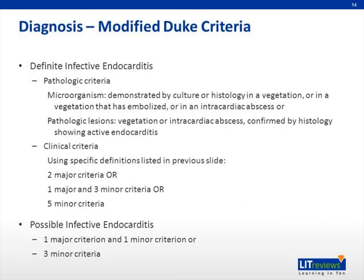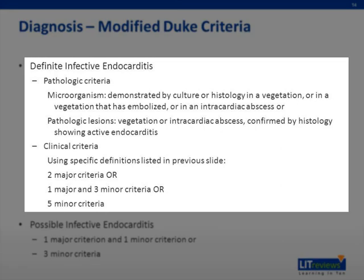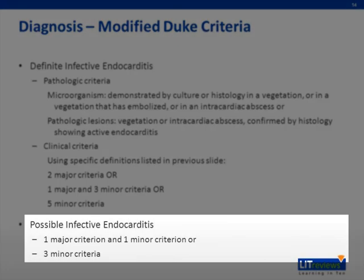Definite infective endocarditis can be defined by pathologic criteria — a microorganism demonstrated by culture or histology in a vegetation, in an embolized vegetation, or in an intracardiac abscess — or by pathologic lesions confirmed by histology showing active endocarditis. When histological diagnosis is not available, clinical criteria apply: definitive endocarditis requires two major criteria, or one major and three minor criteria, or five minor criteria. Possible infective endocarditis is defined by one major and one minor criteria, or three minor criteria.